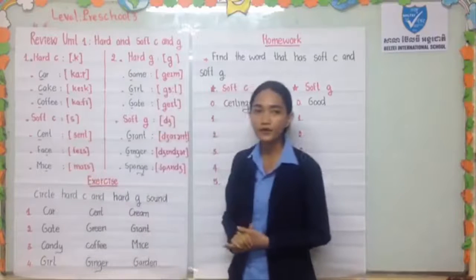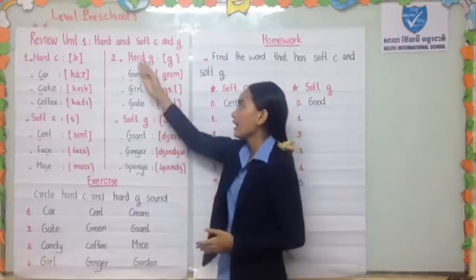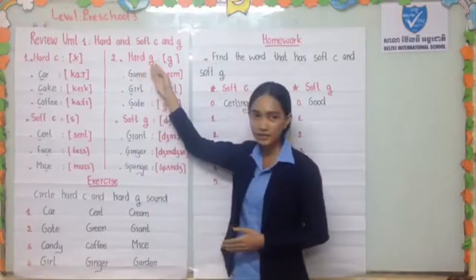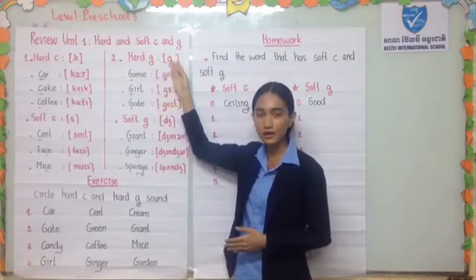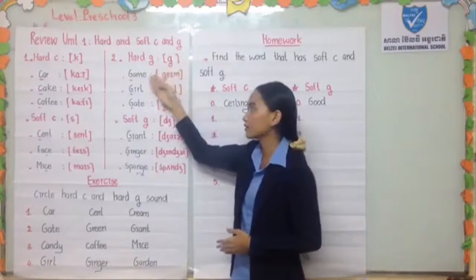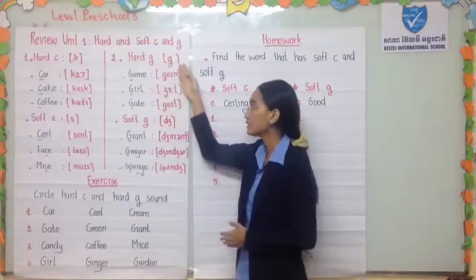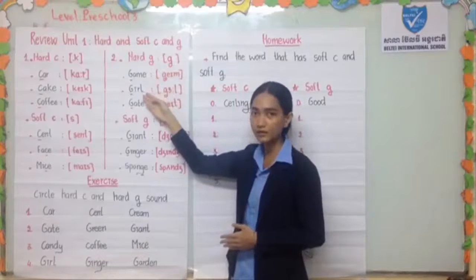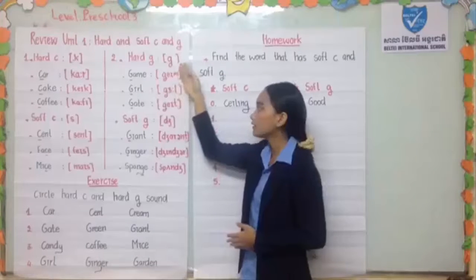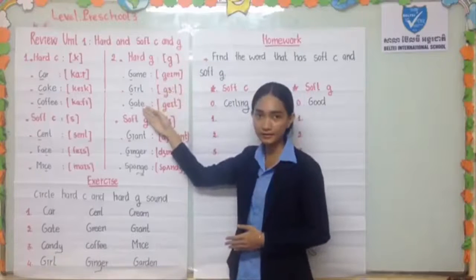And for number 2, hard G makes the 'G' sound. Examples are: Gun, Girl, and Get.